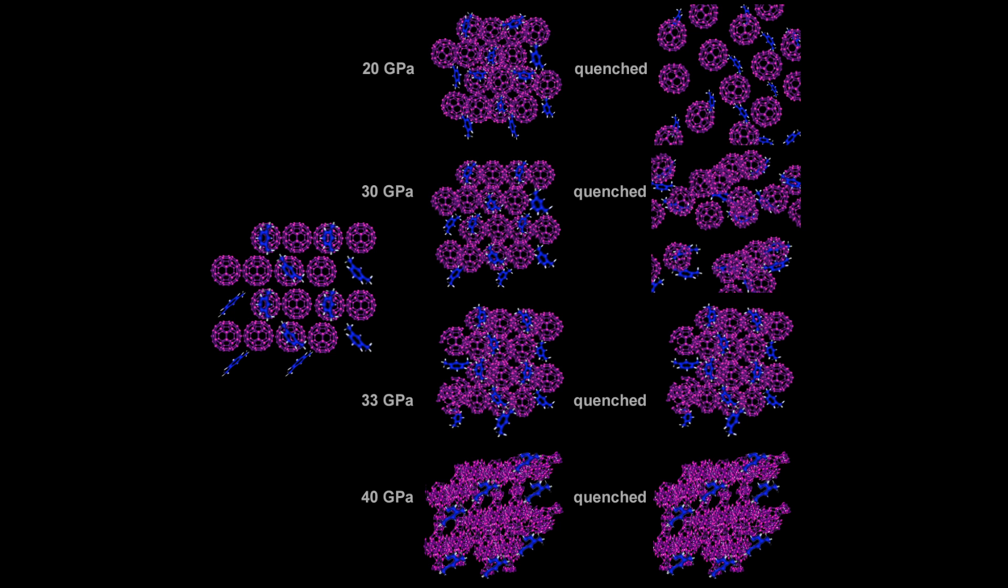At relatively low pressure, the carbon-60's cage structure remained, but as the pressure increased, the cage structure started to collapse into more amorphous carbon clusters. However, the amorphous clusters still occupied their original sites forming a lattice structure.